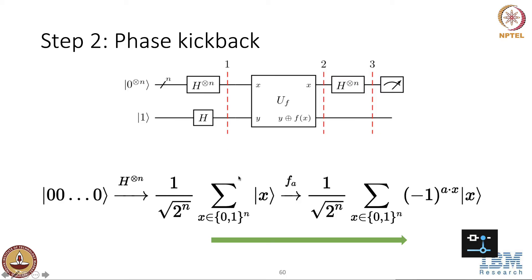So again, this is focusing on the first n qubits. So this is when we apply, this is the output of step 1. And when we apply, when we pass it to the oracle with the n plus 1 qubit, the qubit to be minus state, we will get this output where the summation over x minus 1 to the a dot x x.